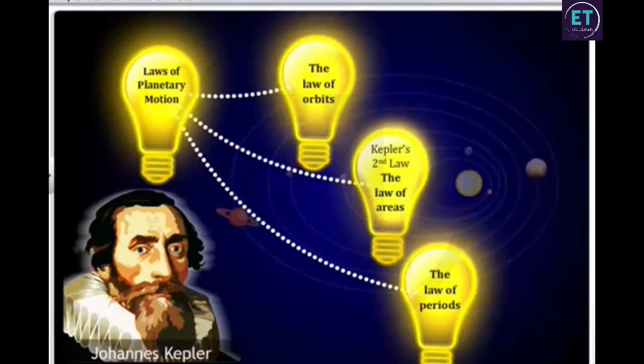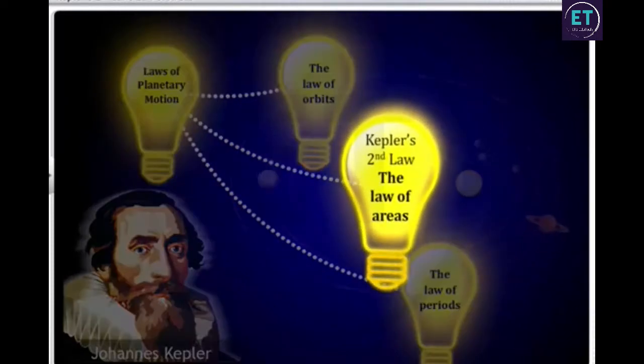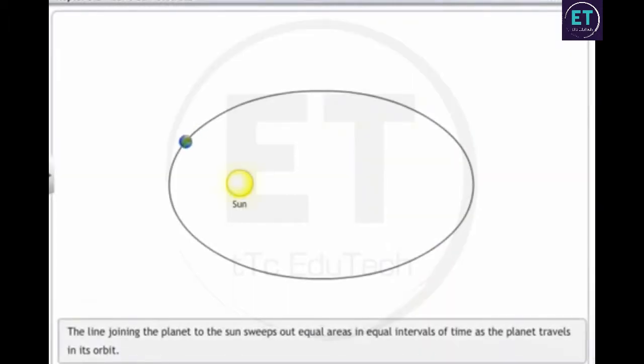Kepler's second law of planetary motion, also known as the law of areas, states that the line joining the planet to the sun sweeps out equal areas in equal intervals of time as the planet travels in its orbit.